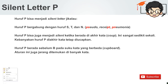Kita tidak perlu mengucapkan huruf P dalam kata bahasa Inggris dengan mengikuti beberapa aturan berikut. Yang pertama, huruf P bergabung dengan huruf S, T, dan N. Contohnya: pseudo, receipt, pneumonia. Perhatikan — huruf P bergabung dengan huruf S, jadi P-nya tidak usah kita baca: pseudo.